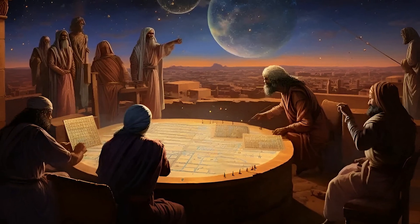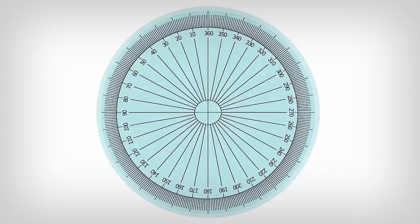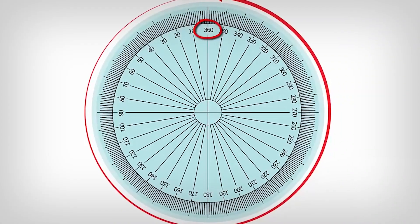Just as they had divided the year into 360 days, they began to divide the circle, which they saw mirrored in the heavens, into 360 equal parts.